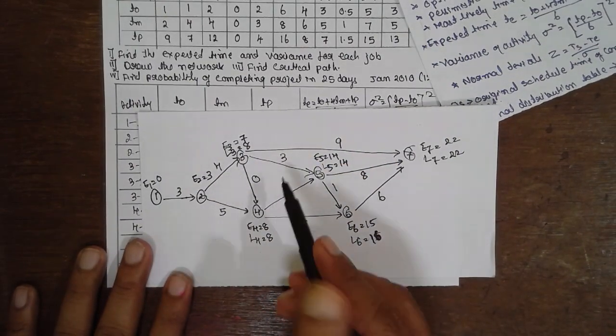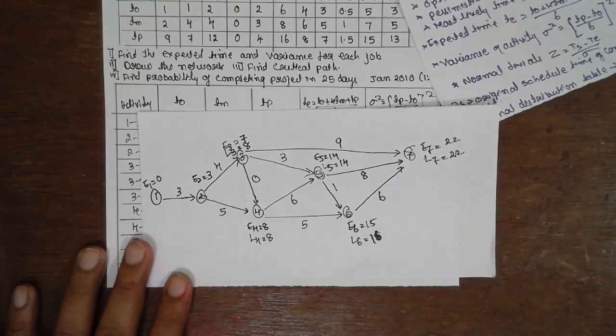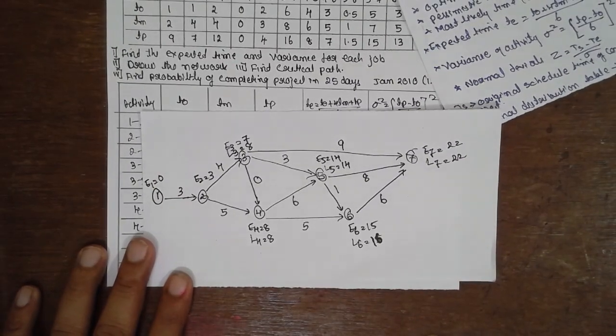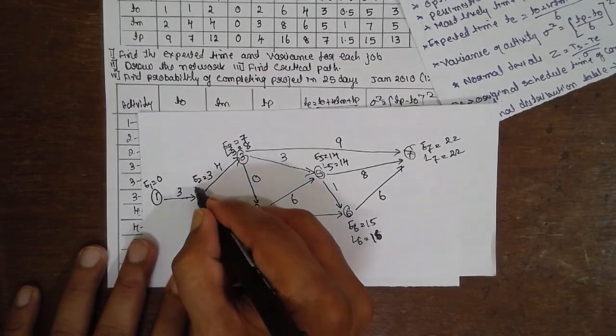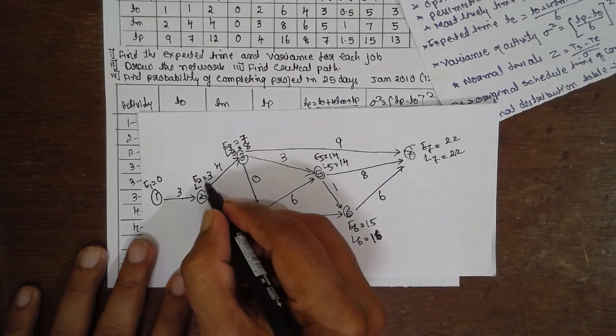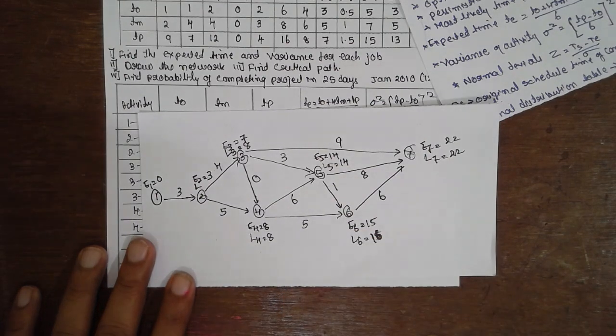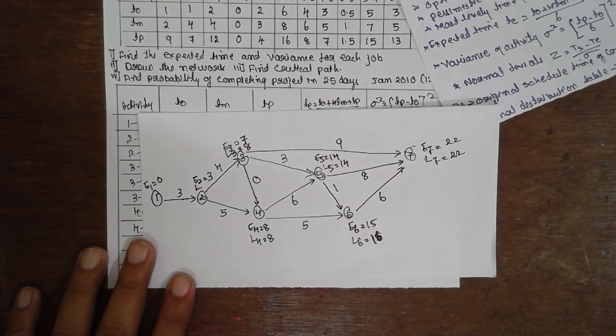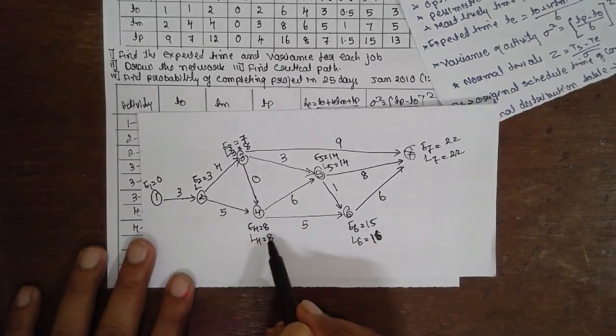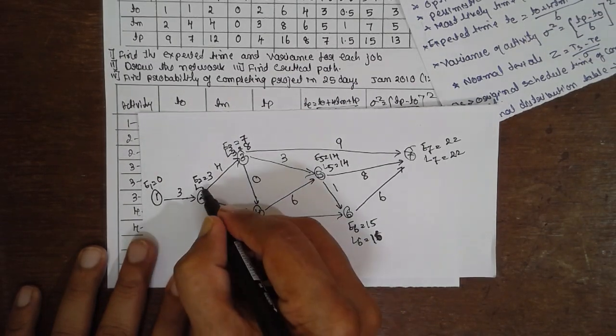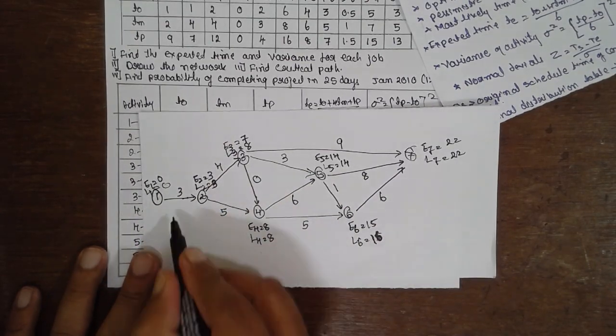Now 8 minus 4 or 8 minus 5. 8 minus 5 is 3 here. 8 minus 4 is 4. Now consider the 4 here. It will be 8 minus 4 will be 4. It should be 3. See here, 8 minus 4 is 4. 8 minus 5 is 3. We have to select the smallest value, 3. Write 3. 3 minus 3 is 0.